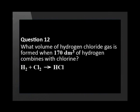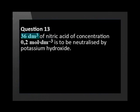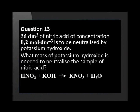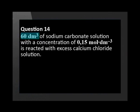36 centimeters cubed of nitric acid of concentration 0.2 moles per decimeter cubed is to be neutralized by potassium hydroxide. What mass of potassium hydroxide is needed to neutralize the sample of nitric acid?